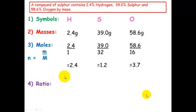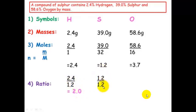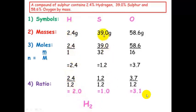Step four — find the ratio by dividing all mole values by the smallest, which is 1.2. Hydrogen: 2.4 ÷ 1.2 = 2. Sulfur: 1.2 ÷ 1.2 = 1. Oxygen: 3.7 ÷ 1.2 = 3.1. If the result is slightly off due to decimals, round to the nearest whole number. So the empirical formula is H₂SO₃.